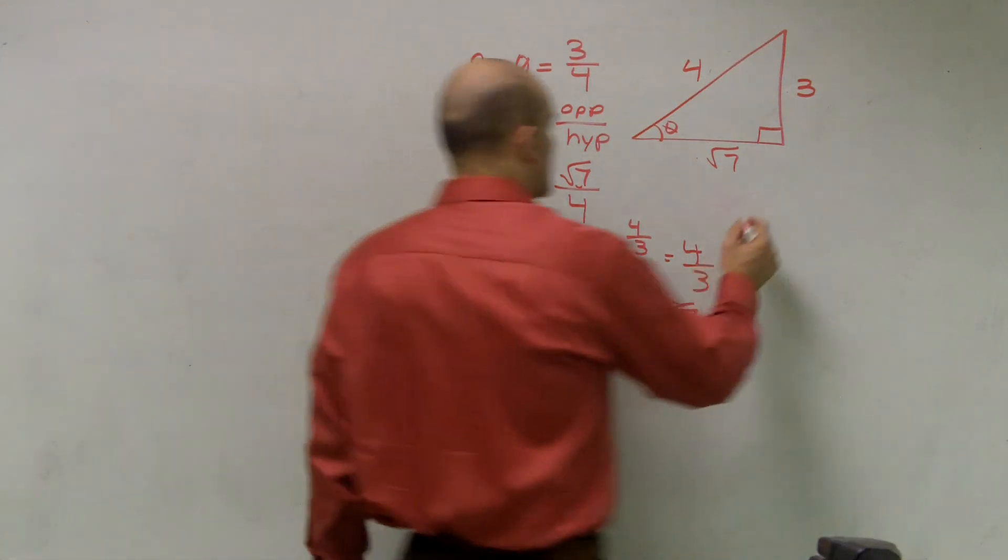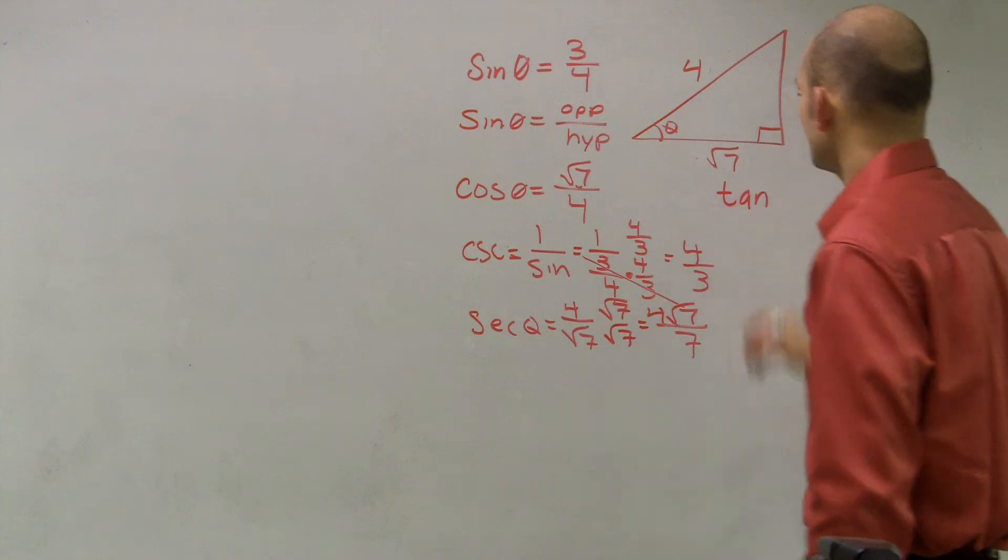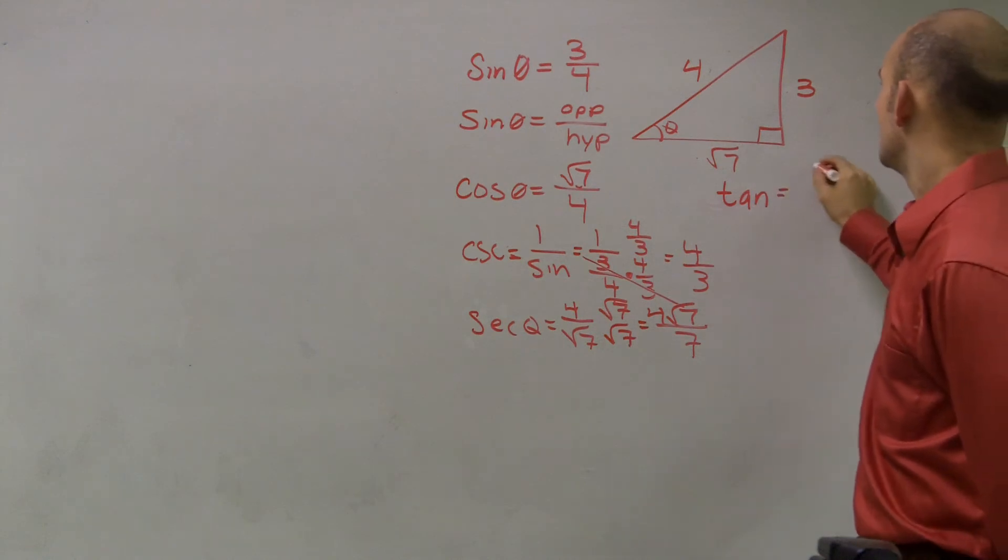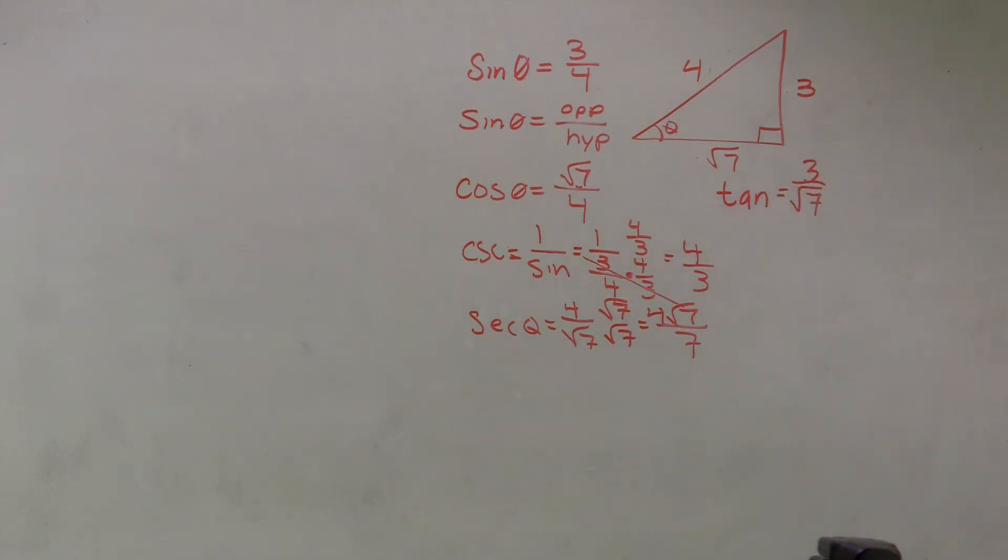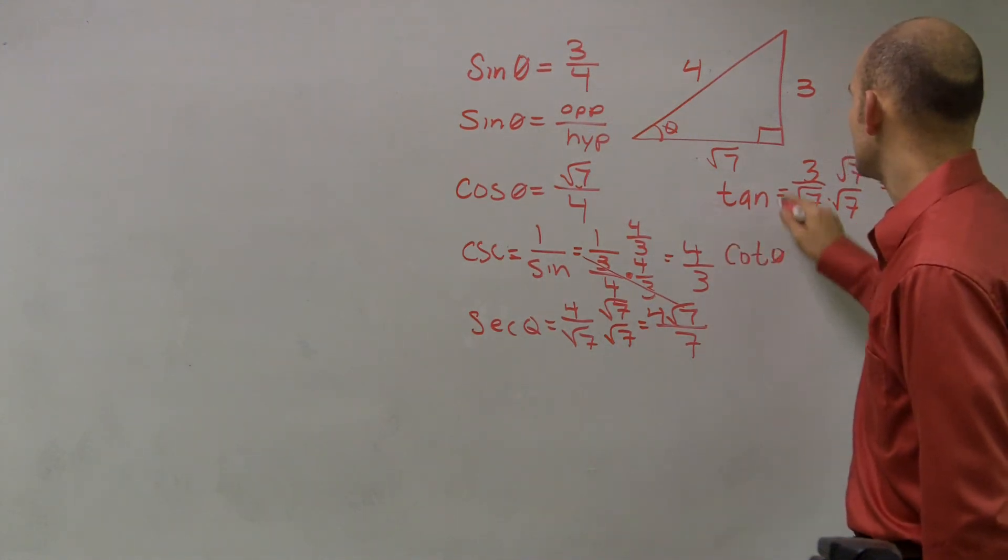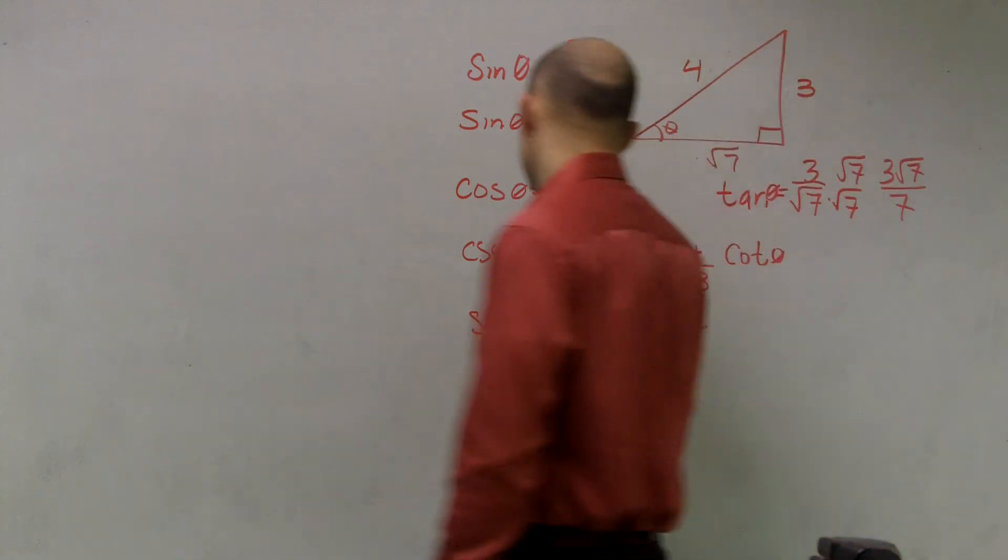Then let's just do tangent. Tangent is going to be opposite over adjacent. So we'll have three over radical seven. Again, we have to rationalize the denominator, so you multiply by radical seven on both sides. So three radical seven over seven. And then the cotangent is just going to be a reciprocal of that. Sorry, that's the cotangent. These are all tangent of theta.